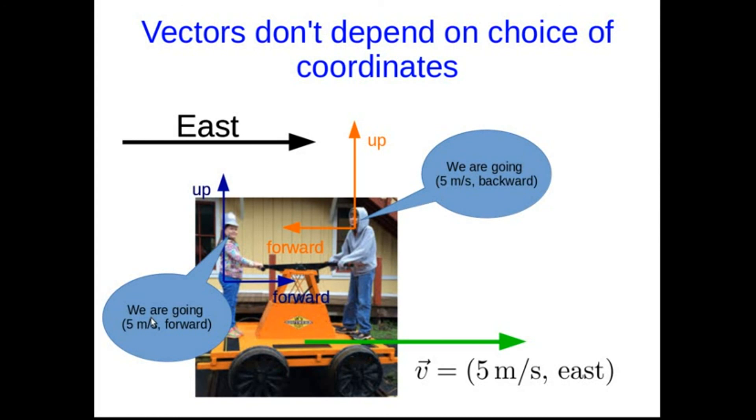And having done that, you might describe the velocities this way: 5 meters per second forward for one of you, and 5 meters per second backward for the other.